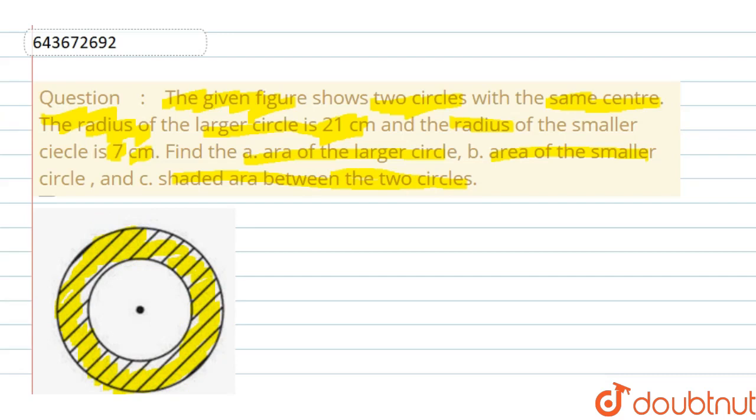Okay, so first of all, radius are given, so we can directly find it out. First portion is area subpart A. Area of the larger circle equals to—as you can see, 21 cm is the radius given in the question. So pi capital R square, we are taking 22 by 7 into 21 into 21.